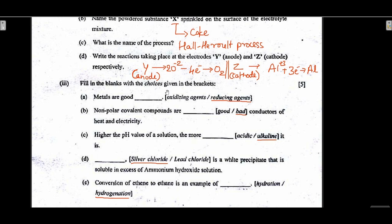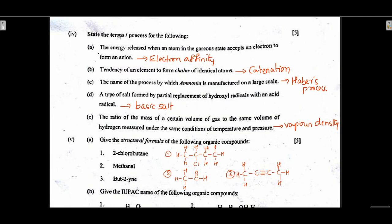Fill in the blanks: metals are good reducing agents; non-polar covalent compounds are bad conductors; higher pH value of a solution means more alkaline; silver chloride is a white precipitate soluble in excess ammonium hydroxide solution; ethane to ethene is hydrogenation — state the terms of the process.